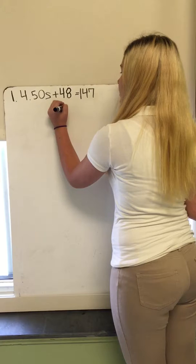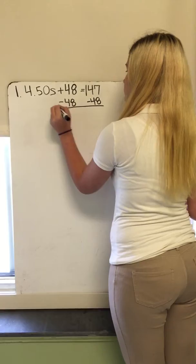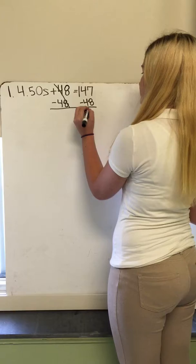Okay, so now you subtract 48 from both sides of the equal sign. 48 minus 48 crosses each other out. $147 minus 48 gives you 99.